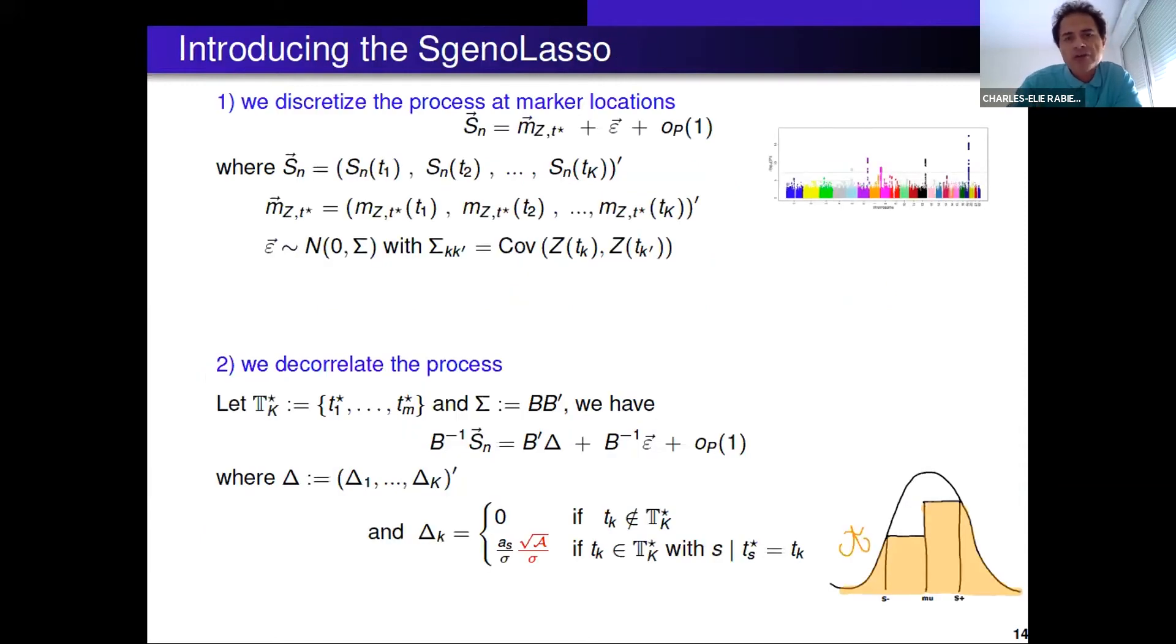How does it work to build the SG no lasso? You first take the points of your Manhattan plot. You take the observed values of your score process at marker locations. Since we have dense maps we only perform tests at markers, so you keep all the points. Then in order to place the problem in the regular linear model, you decorrelate the process. Since I'm under a linkage study I perfectly know the covariance matrix here, and I have the marker placed along the genome.